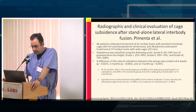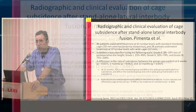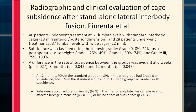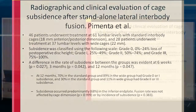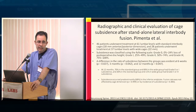Looking at this subsidence issue: Pimenta evaluated their series retrospectively and concluded that the larger the cage in terms of its lateral and AP dimensions, the smaller the incidence of subsidence. This makes perfect sense because you want to engage the outer ring of the end plate to the maximum degree. When doing lateral interbody fusions to reduce the risk of subsidence and maintain a long-lasting distractive effect, you really want to make sure your cage is as long as possible from both the lateral and AP dimensions.